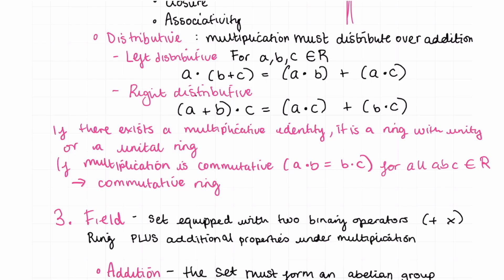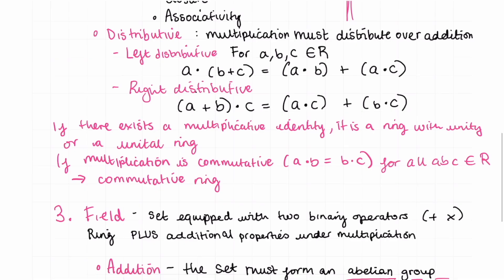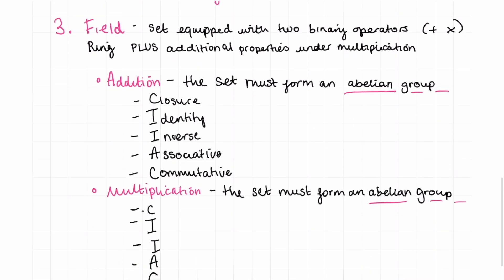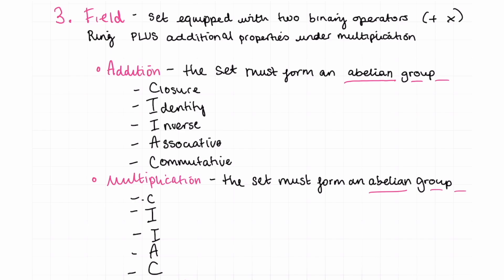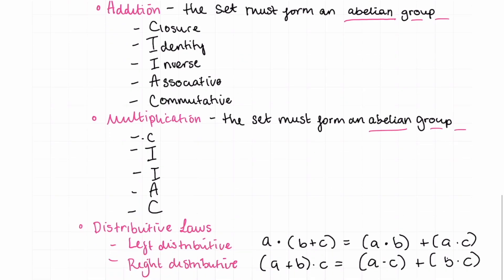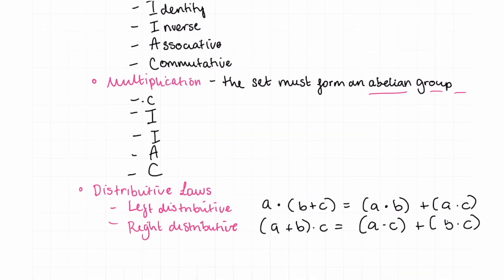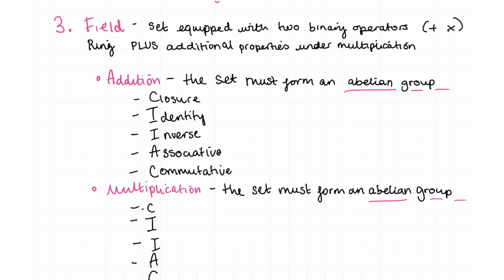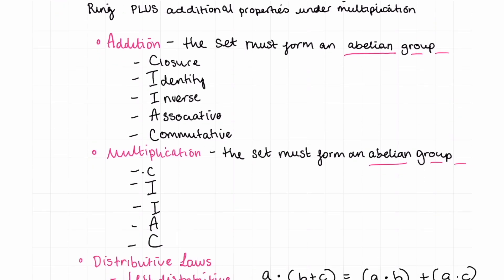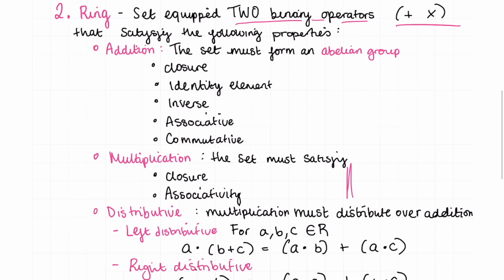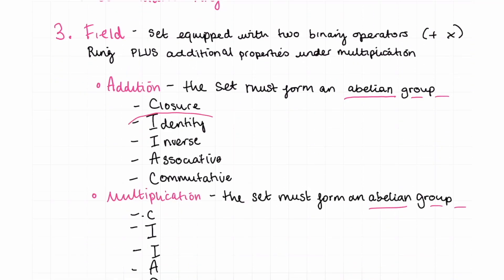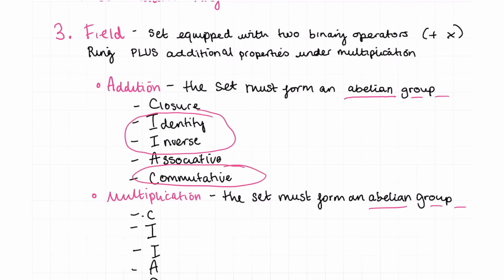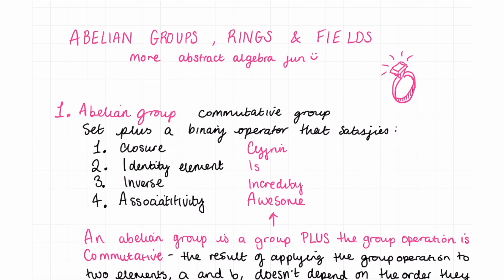If under multiplication there exists an identity element in the set, the ring is called a unital ring. If multiplication is also commutative for every element in the set, it is called a commutative ring. Finally, a field is a set equipped with two binary operators where under addition it forms an abelian group, under multiplication it also forms an abelian group, and it satisfies the distributive laws. A field is therefore a ring plus these additional multiplicative properties: identity, inverse, and commutativity under multiplication. I'll see you in the next one where we talk about cyclic groups.